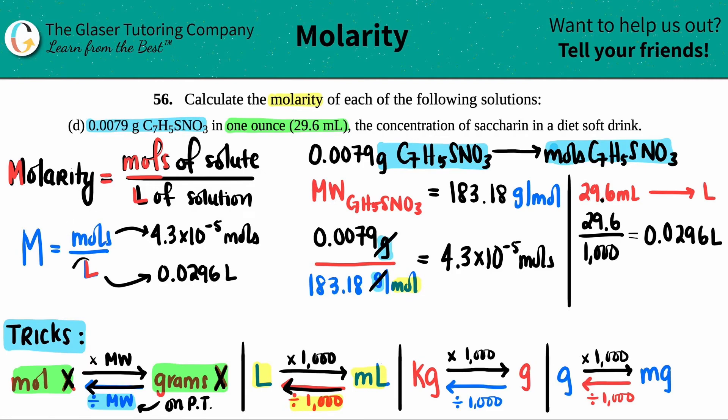Now we have the moles and we have the liters, we can finally figure out the molarity. Molarity equals 4.3 times 10 to the negative fifth moles divided by 0.0296 liters. Let's do the math: 4.3 times 10 to the negative fifth divided by 0.0296. Lowest number is two sig figs, so I need to round to two sig figs: 0.0015. These units do not cancel, so the unit for molarity is mole per liter.